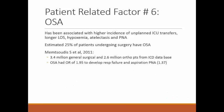Patient-related risk factor number six: OSA. OSA is associated with higher rates of ICU transfers, longer length of stay, hypoxemia, atelectasis, and pneumonia. An estimated 25% of surgical patients have OSA, and it is significantly underrecognized. A 2011 study of 3.4 million surgical patients from ICD databases showed OSA had an odds ratio of 1.9 for respiratory failure, defined as requiring mechanical ventilation greater than two days or aspiration pneumonia.